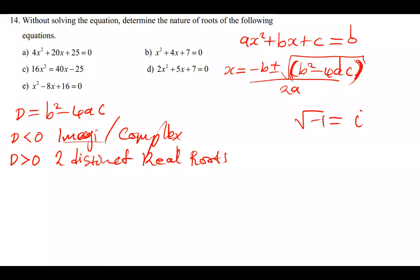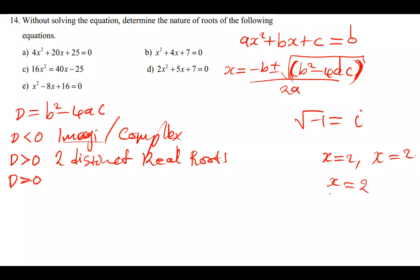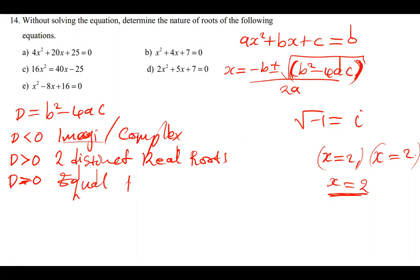If the discriminant is equal to zero, it means you're going to have equal real roots. You may have solved a quadratic equation where the first answer is x = 2 and the second answer is also x = 2, meaning the solution is just equal to two. Such quadratic equations are said to have equal roots. When D = 0, the given quadratic equation has equal real roots.